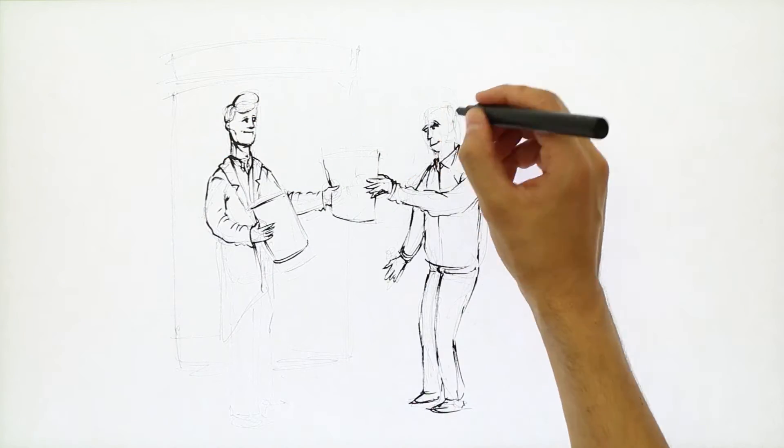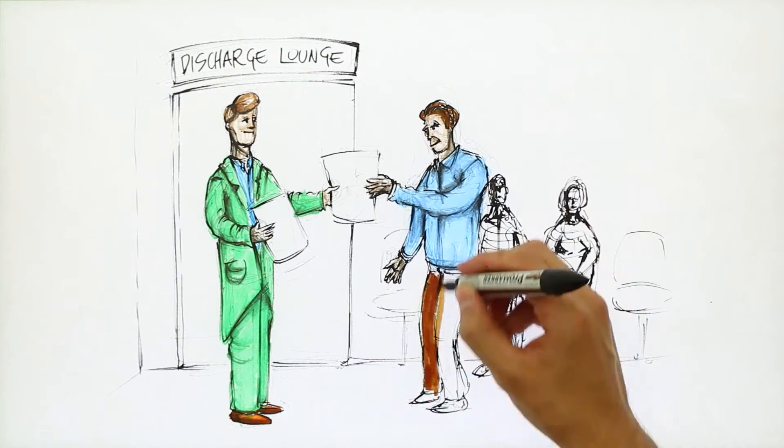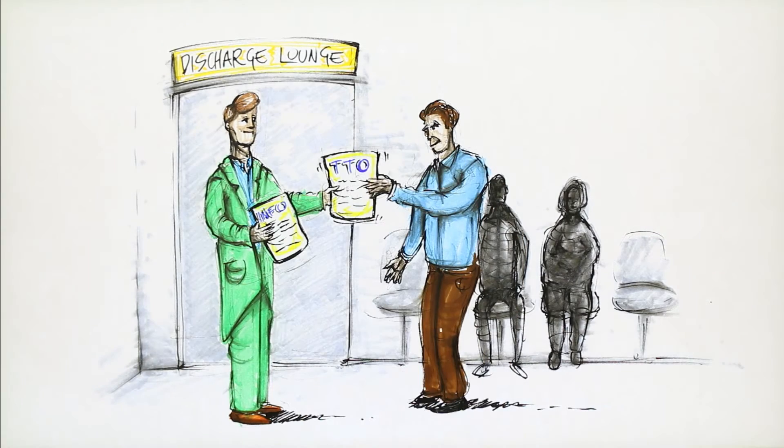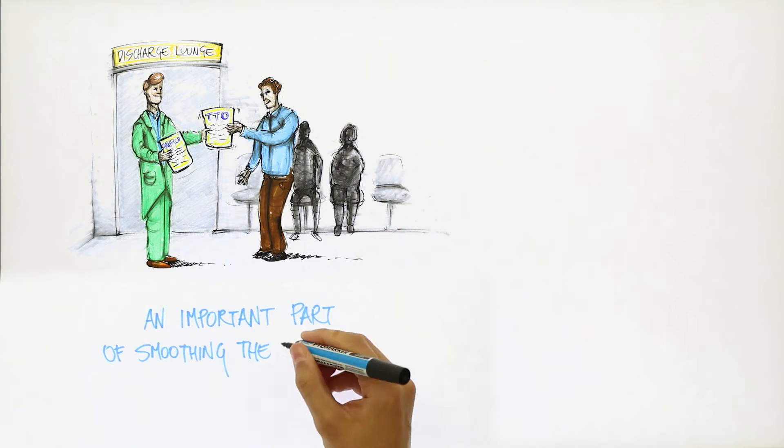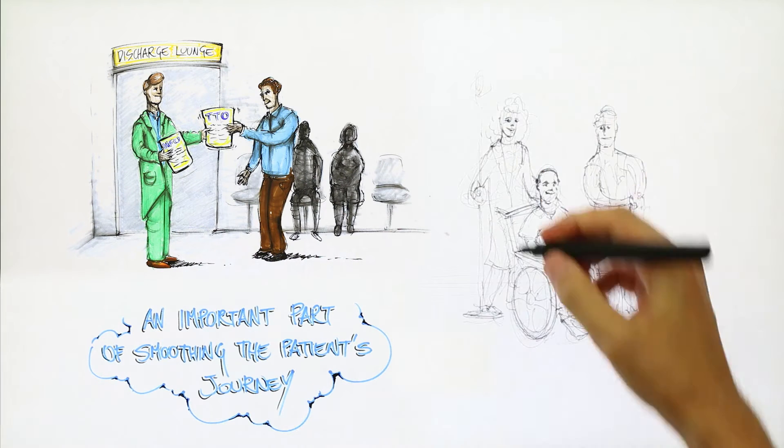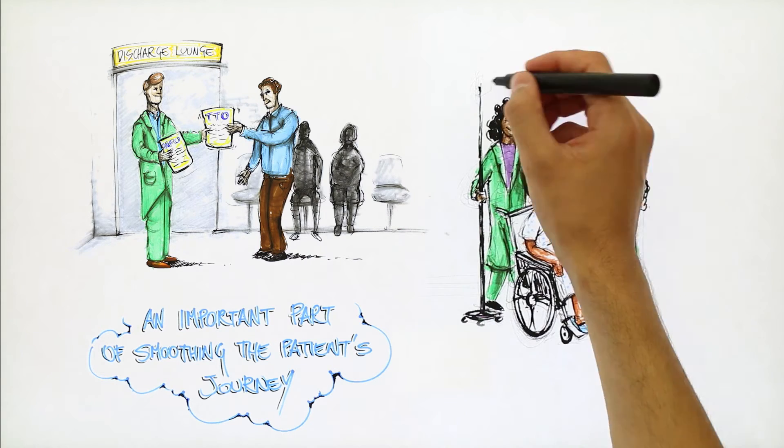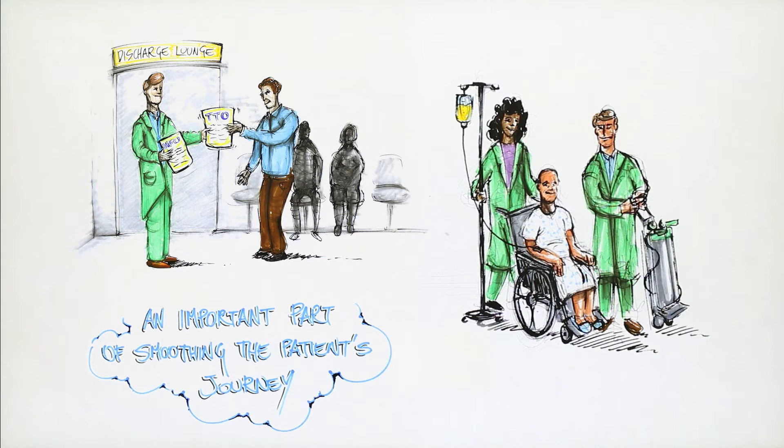To help with this, the Trust operates a discharge lounge, which is staffed by a team who can collect and hand out the TTOs we have ordered, along with relevant patient information. The discharge lounge is an important part of smoothing the patient's journey, providing ongoing nursing care during the day of discharge, such as administering IV antibiotics, removing drains and giving oxygen therapy.